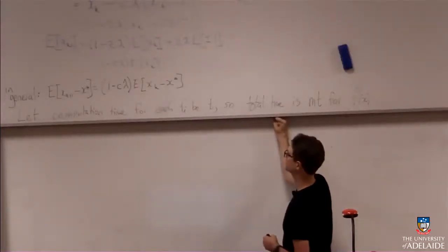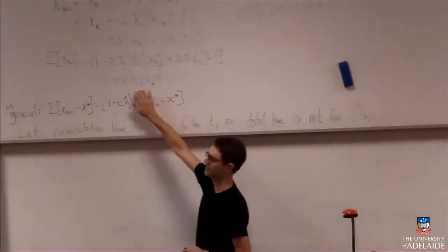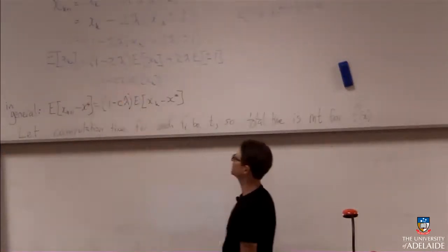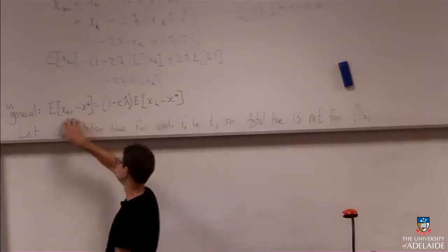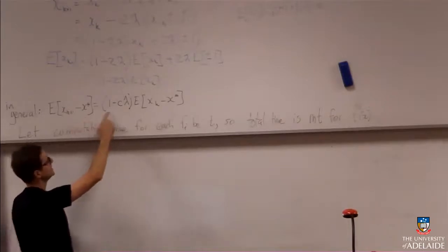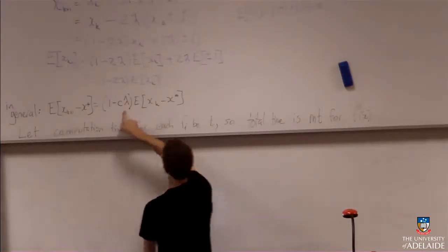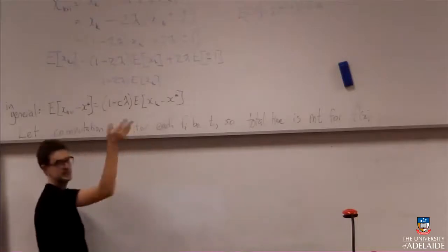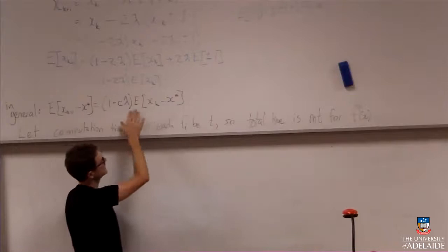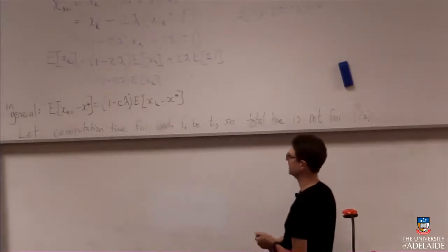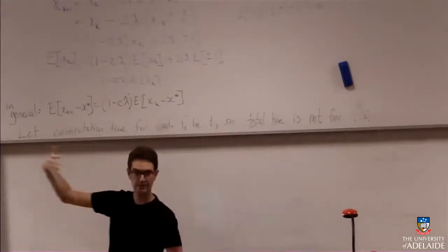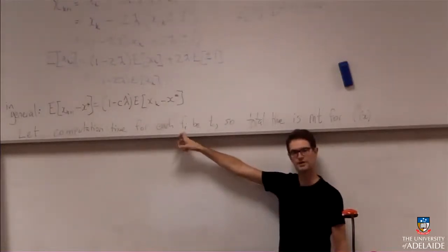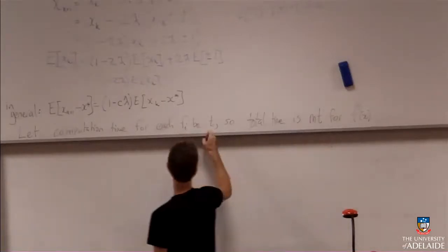We apply stochastic gradient descent to functions that are a sum of a large number of Fᵢ's, where each Fᵢ corresponds to a different data point. That's a relatively cheap computation — it takes time t. If things are set up right, that's probably not huge.